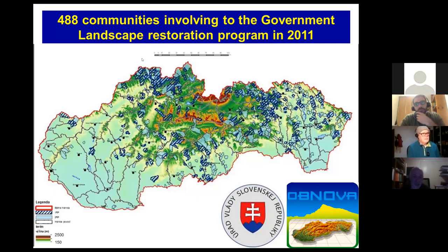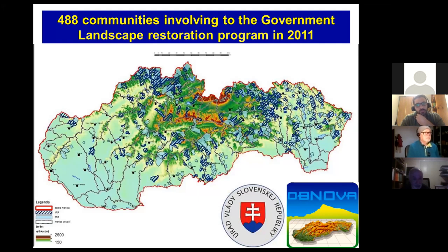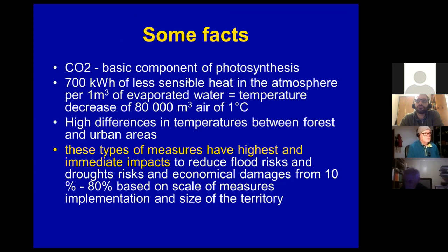This is a map of Slovakia — here are the High Tatras. Imagine that 488 communities were involved in this government program. The key was that money went directly from the capital city to the communities.